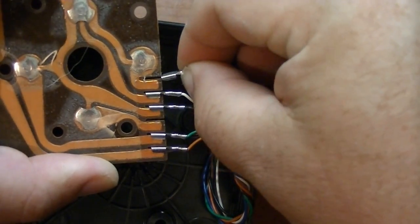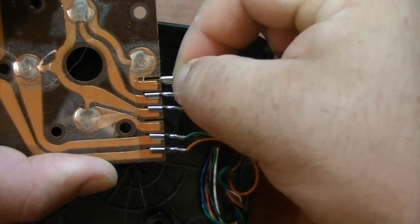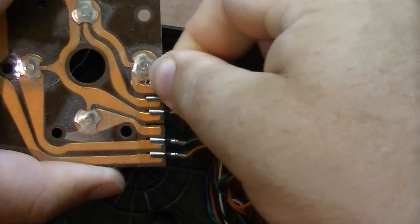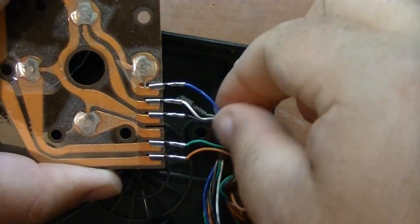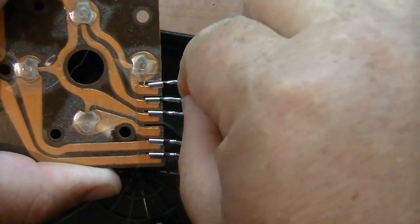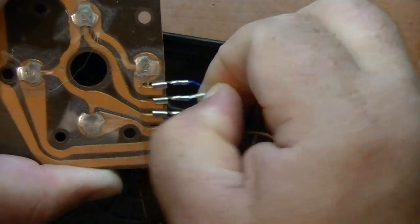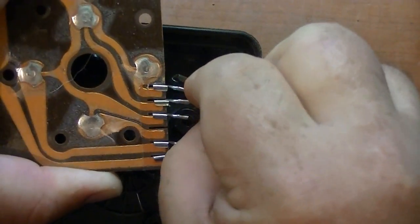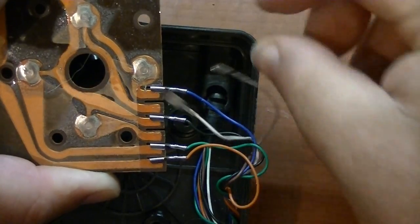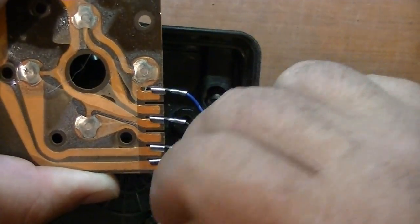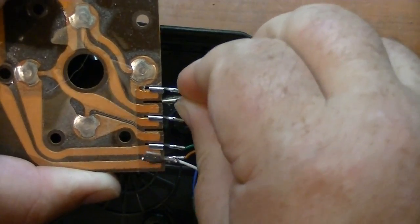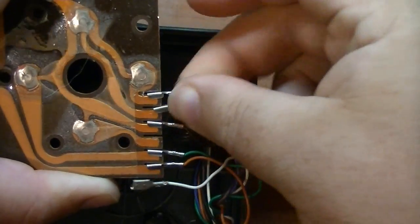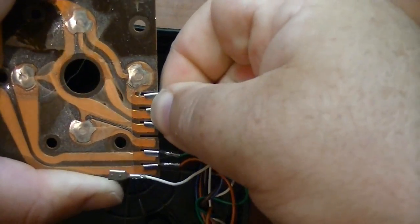So move the blue wire up here and we'll take the white wire off and we'll put the brown wire where the white wire used to be like this. All right.